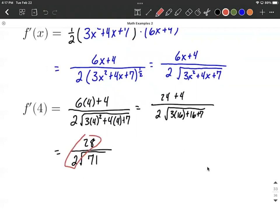Now the 28 and 2, those are both multiples of 2. So we're going to reduce that part down a little bit. We can say that 28 divided by 2 makes 14 over the square root of 71.